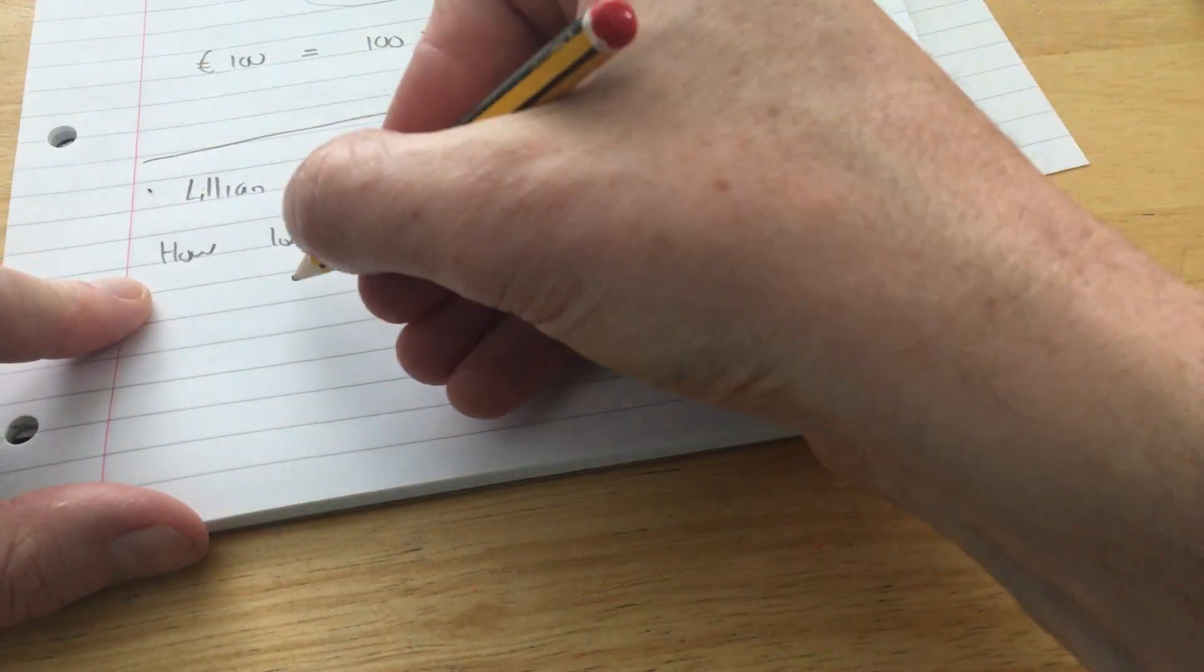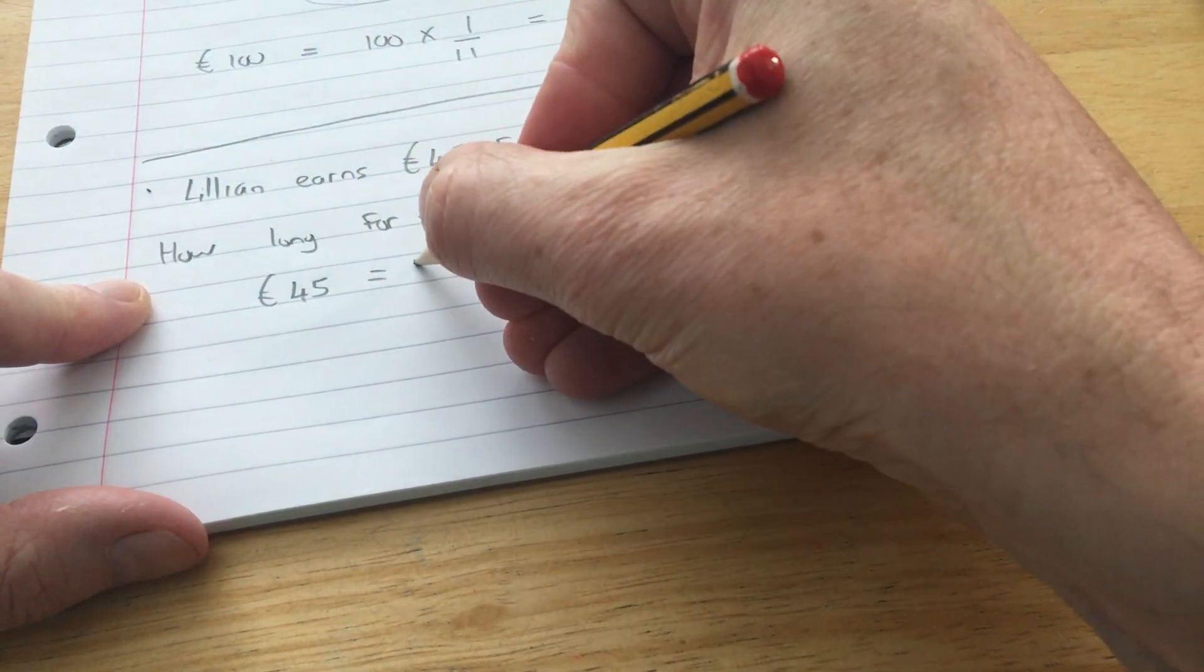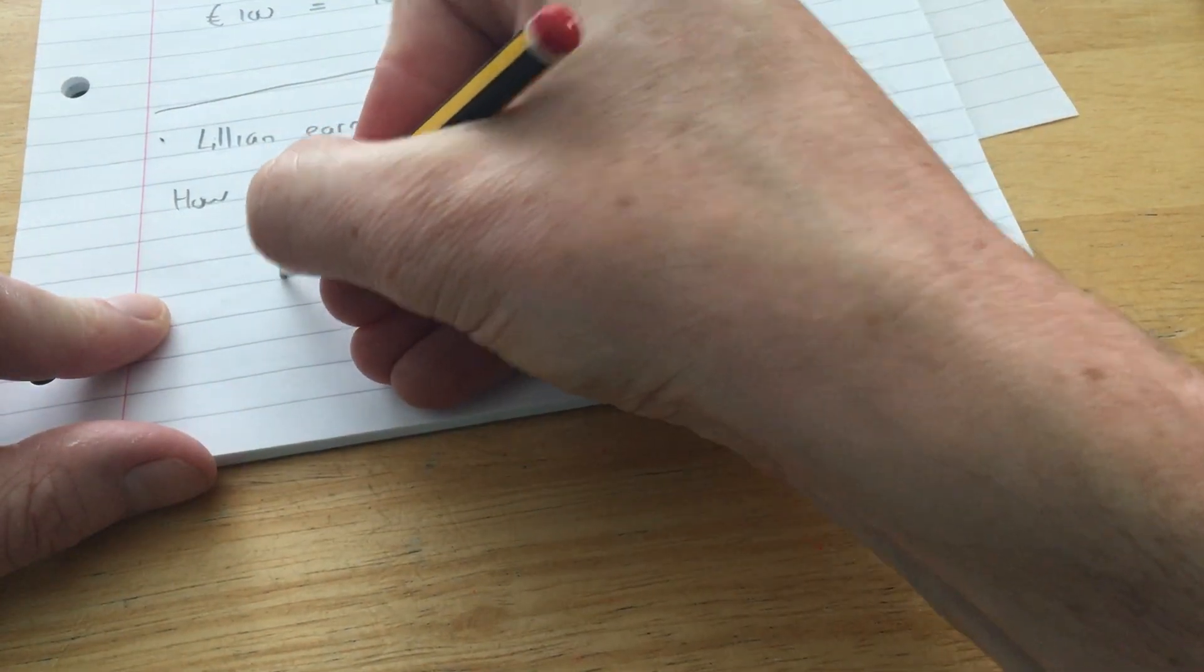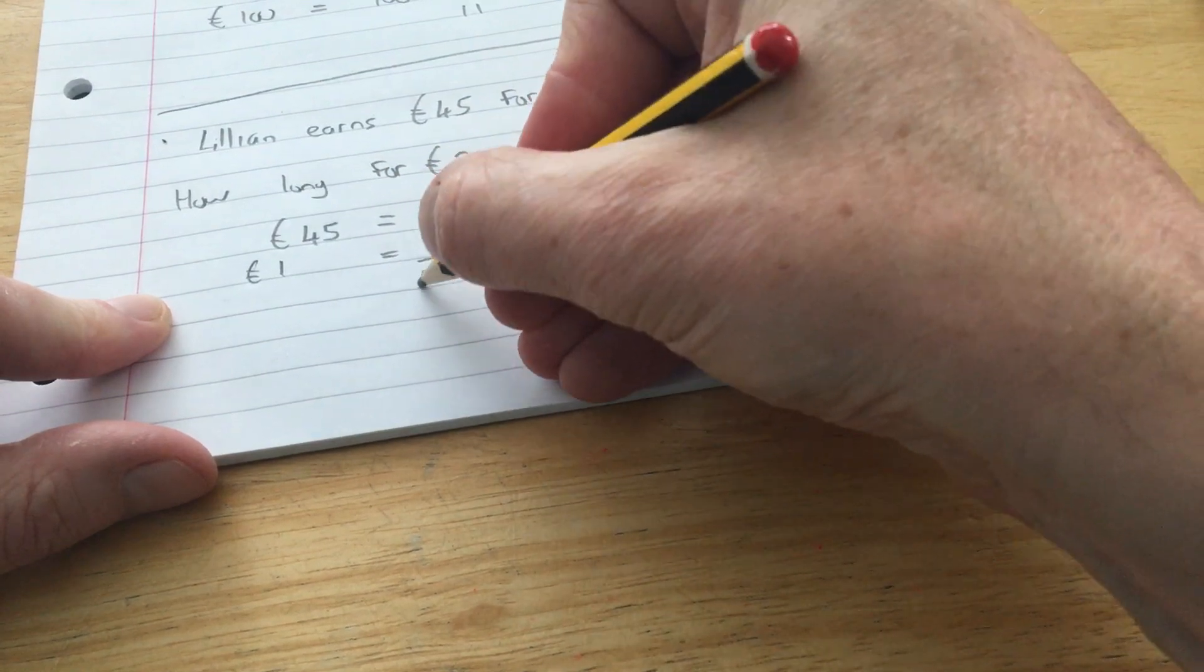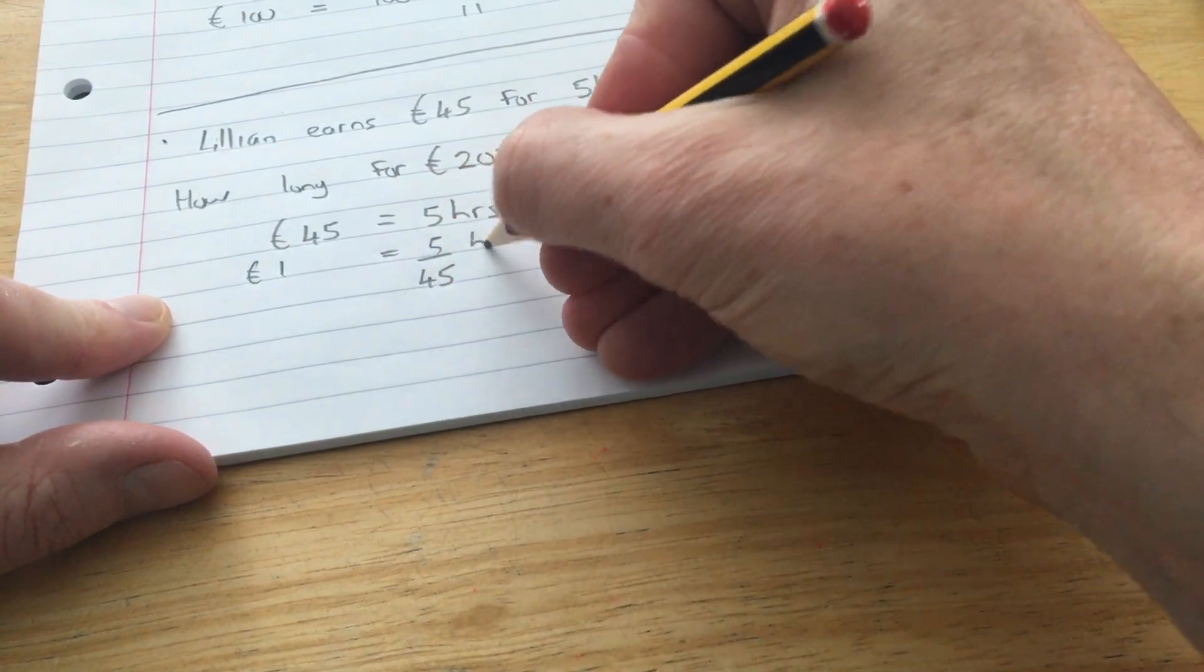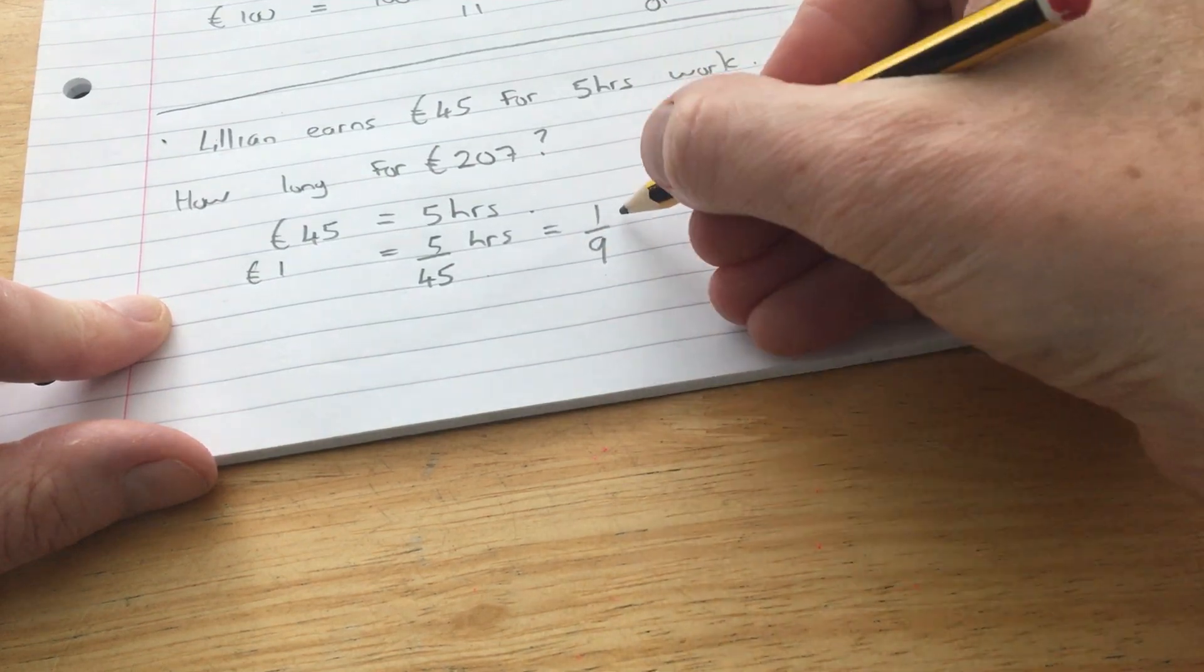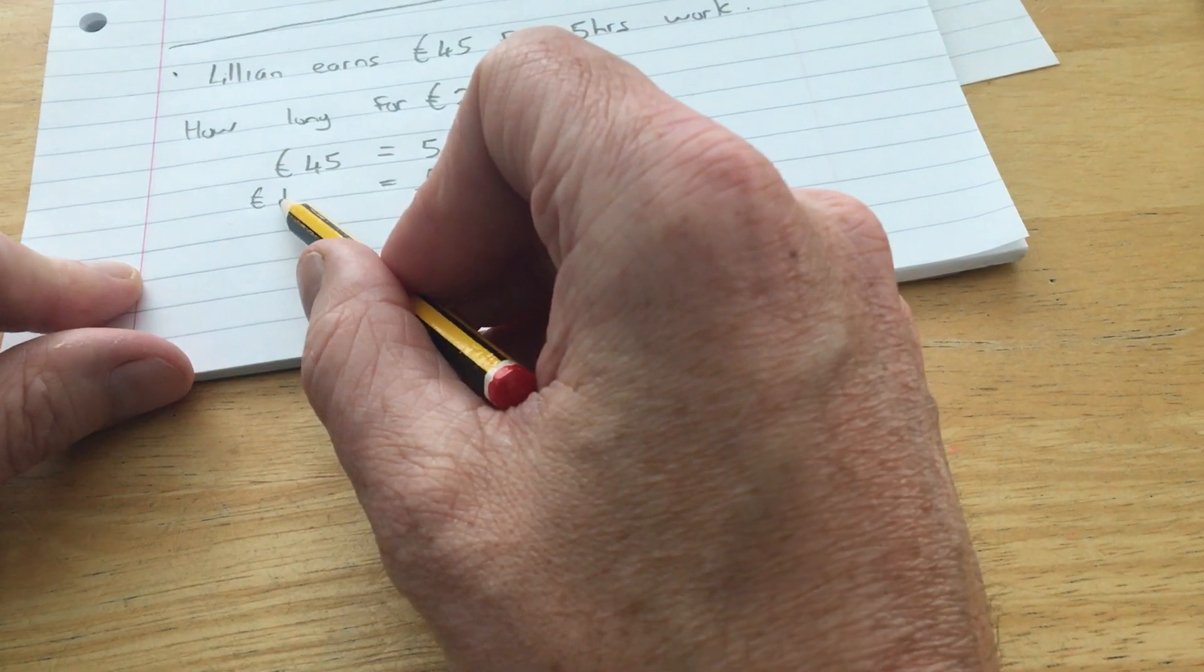45 euro equals 5 hours work. So 1 euro would be 5 over 45 hours, which is a ninth of an hour. When she works a ninth of an hour, she gets 1 euro.